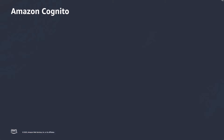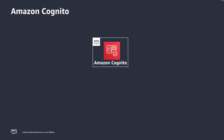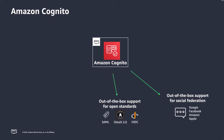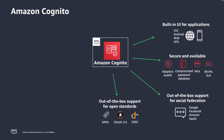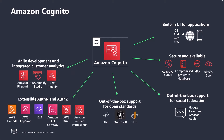Amazon Cognito is a developer-centric and cost-effective customer identity and access management service. It provides a secure identity store and supports federation with SAML, OpenID Connect, and social identity providers. This enables you to add secure authentication to your customer-facing applications that can scale to millions of users.